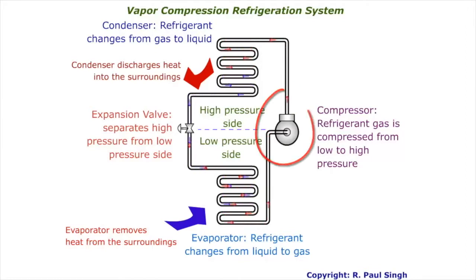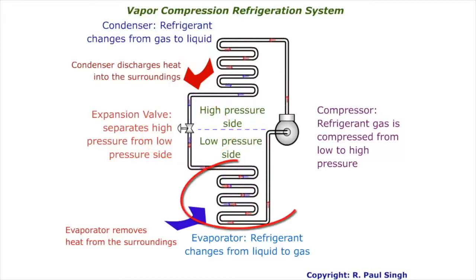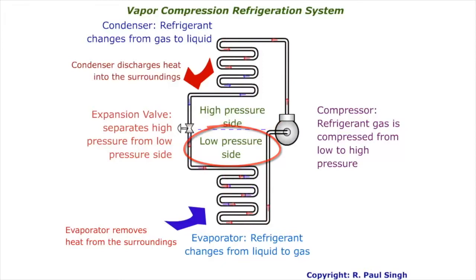The expansion valve controls the flow of the liquid refrigerant into the evaporator. The compressor consists of a motor that sucks in the refrigerant from the evaporator and compresses it in a cylinder to make a hot, high pressure gas. The evaporator is used to cool the contents inside the refrigerator. It absorbs heat from inside, causing the liquid refrigerant to turn into vapor. The condenser helps in the liquefaction of the gaseous refrigerant by absorbing its heat and expelling it to the surroundings. The refrigerant, commonly referred to as the coolant, is the liquid that keeps the refrigeration cycle going.